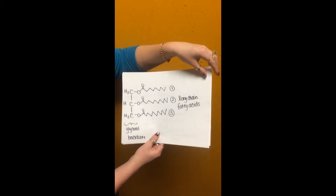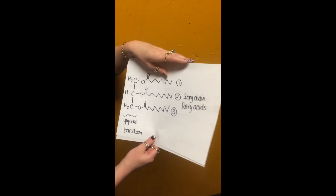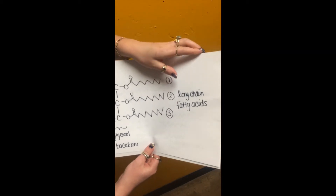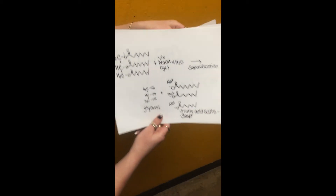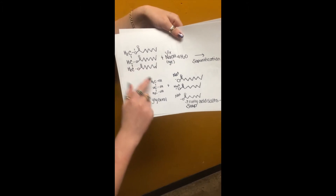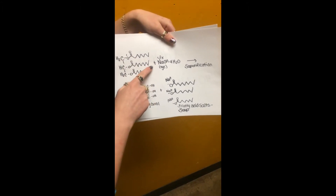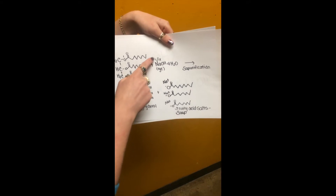This is the glycerol backbone, and these are the three long-chain fatty acids. The mechanism for making soap: we're going to take the triglyceride, and for every long-chain fatty acid, there needs to be a corresponding amount of lye — so three.